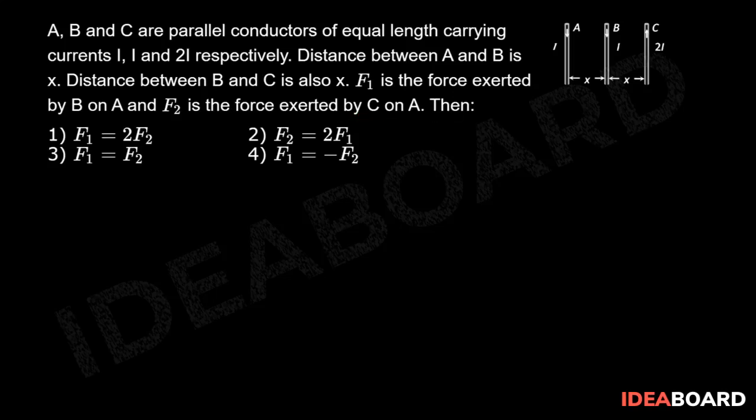Now, F1 is the force exerted by B on A. So F1 equals mu naught by 2 pi i into i by x. So currents are in same direction. The force between them is attractive.